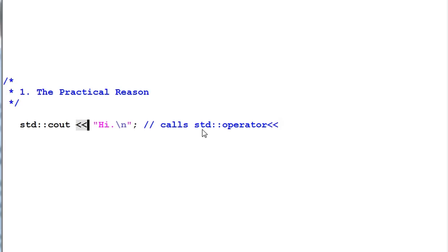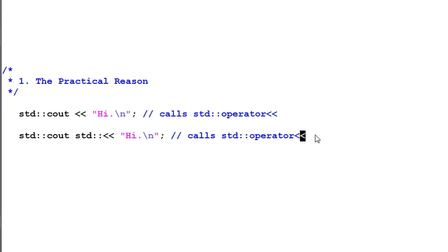So if we don't have Koenig lookup, we'll end up having something like this. This is very ugly. And what's worse is this code won't even compile. In order for it to compile, you have to do something like this.